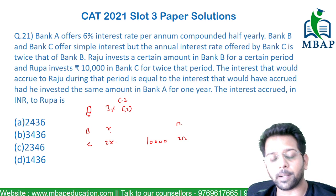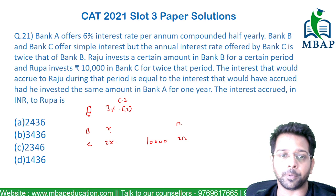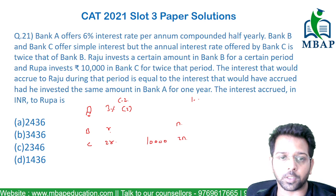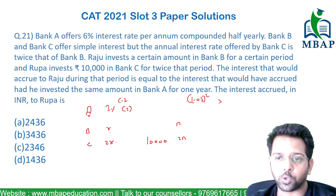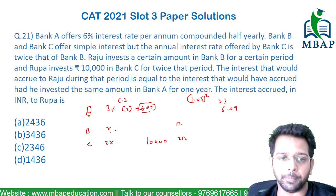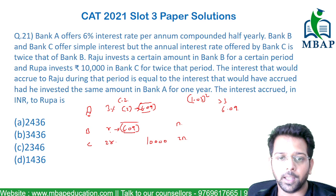Now, 6% compounded semi-annually: 3% compounded twice gives you (1.03)² which equals 6.09%. So the effective annual rate is 6.09%. This means Bank B's rate R is equivalent to 6.09%, if you invest for N years.